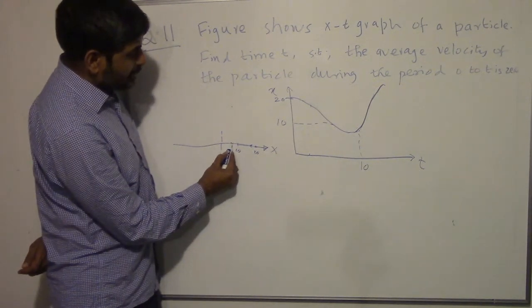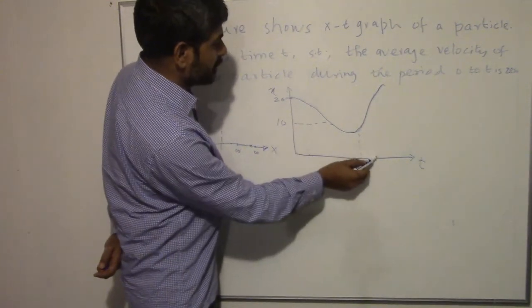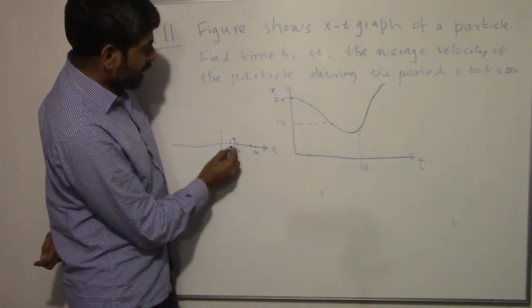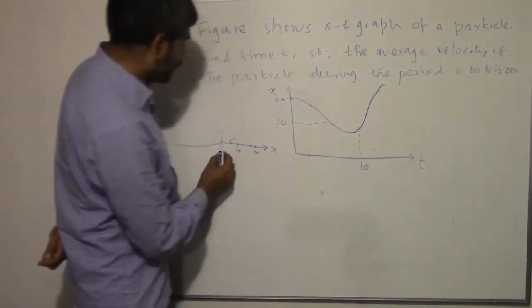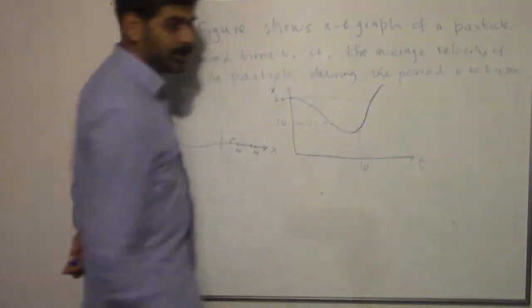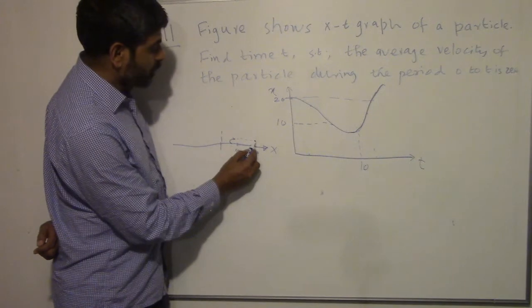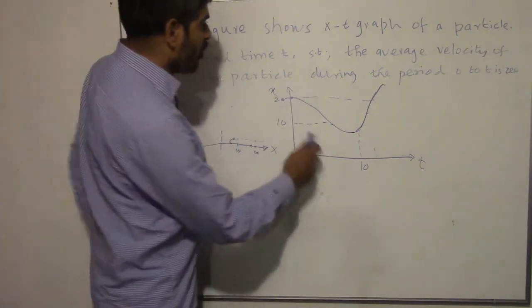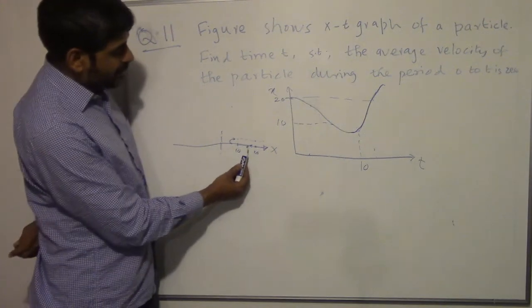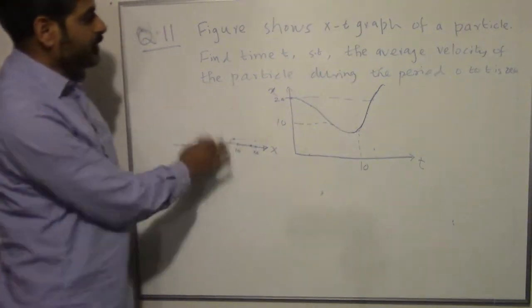Once the particle passes that lowest point, its displacement starts increasing again — it starts moving in the positive x direction. From there it goes back up, maybe 15, then 18, then 20, and beyond. So the particle moves out, comes back to displacement 20, then moves further. This whole graph can be understood in terms of this kind of back-and-forth movement, though the rate of movement is not shown directly.